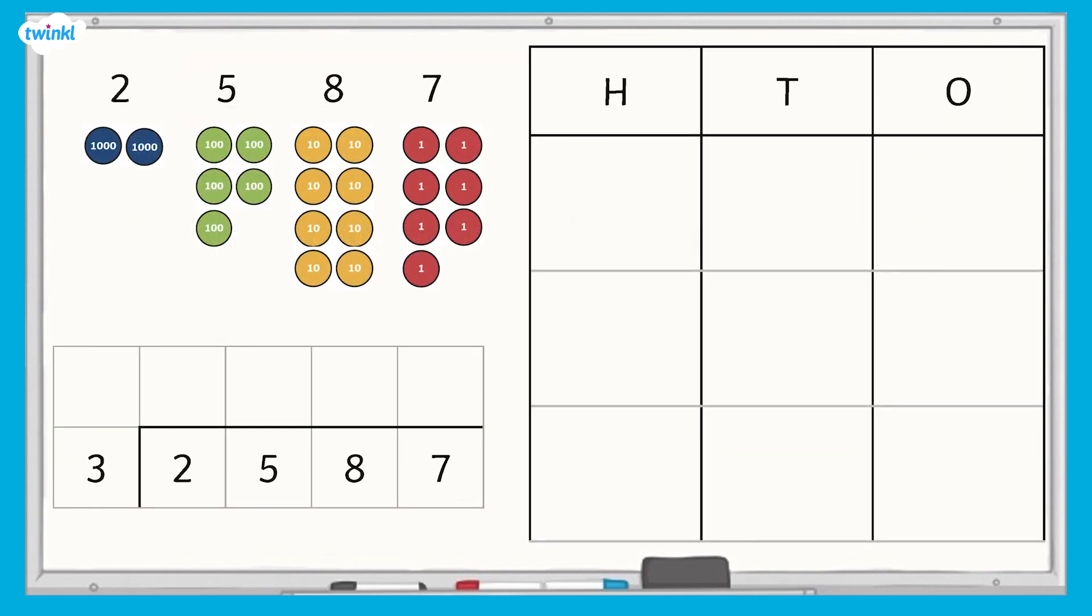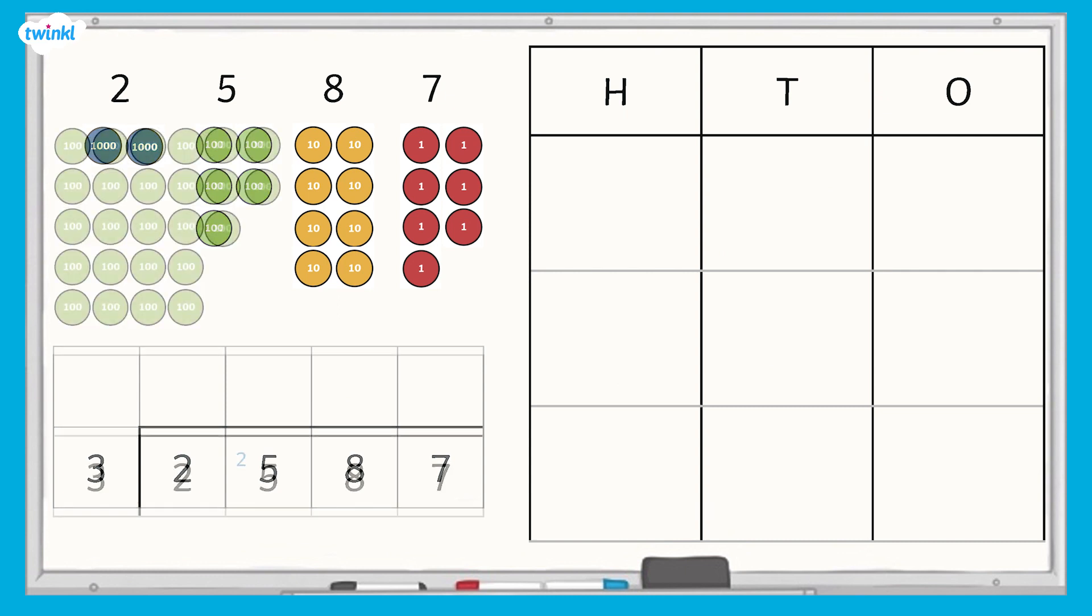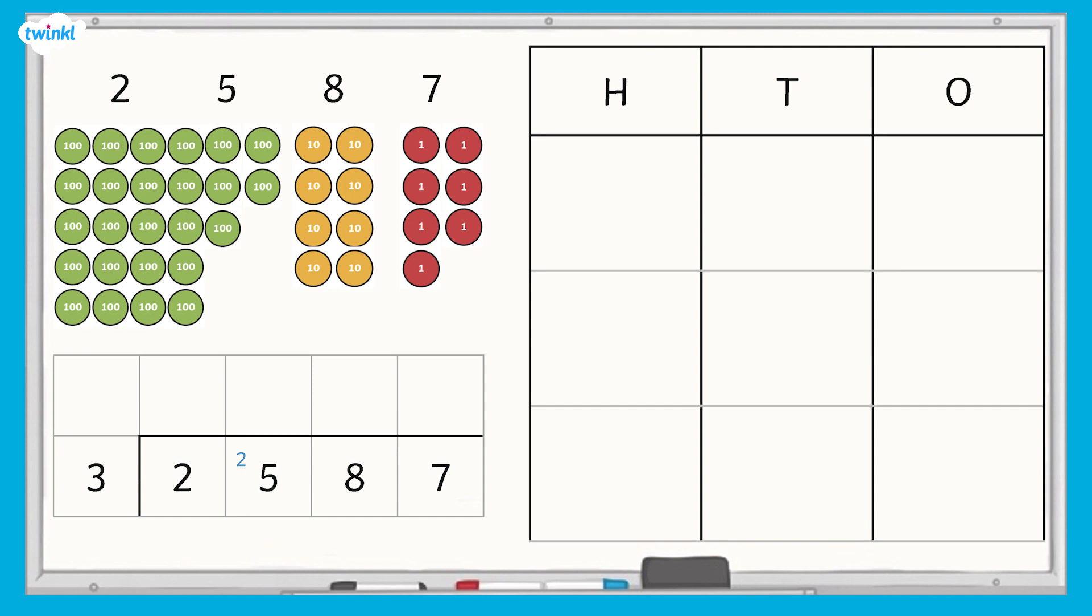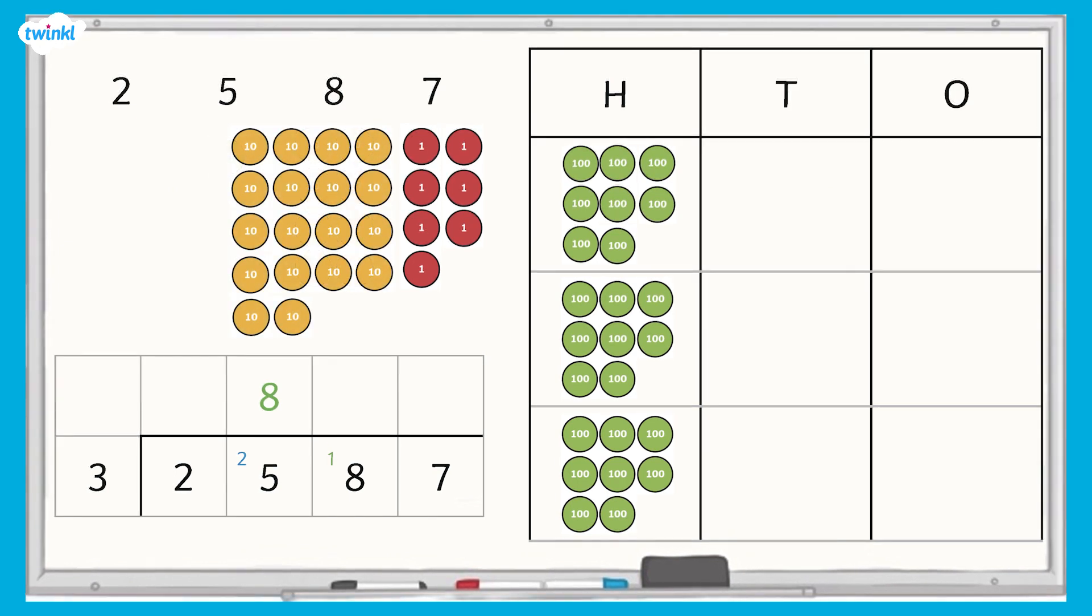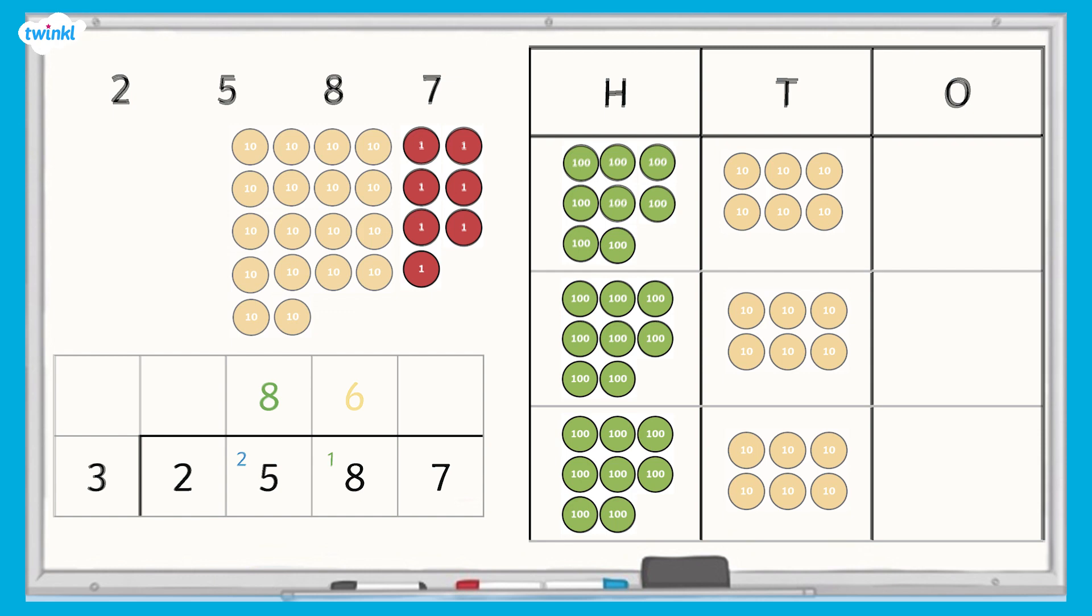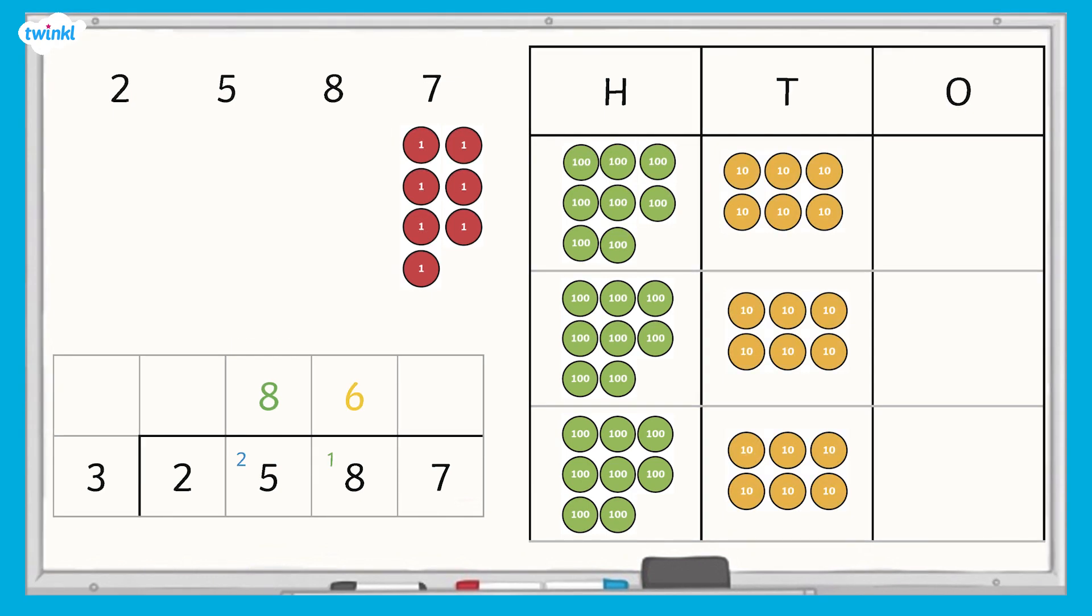Two thousands divided by three is zero thousands with two thousands left over. Exchange the remaining two thousands for twenty hundreds. Twenty five hundreds divided by three is eight hundreds with one hundred left over. Exchange the remaining hundred for ten tens.